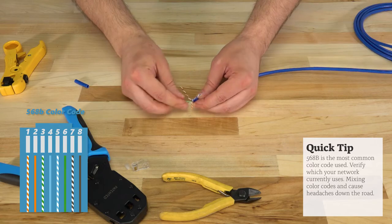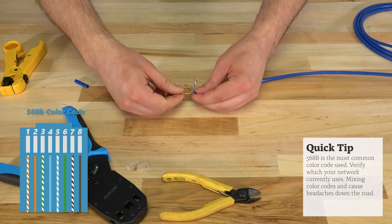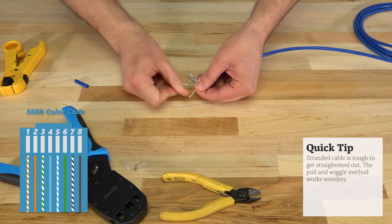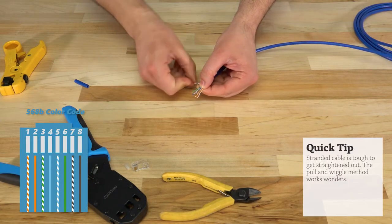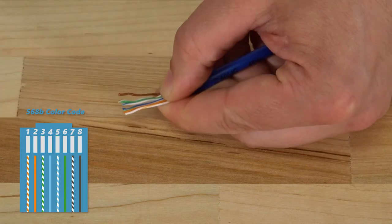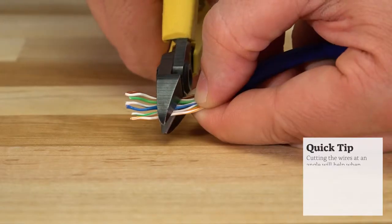Next we'll start untwisting the pairs and arranging them in the correct order for the 568B color code. You'll want to go from orange to green to blue and then brown. Make sure to keep pressure where the jacket ends to ensure the wires don't move around. After the wires are in the correct order,